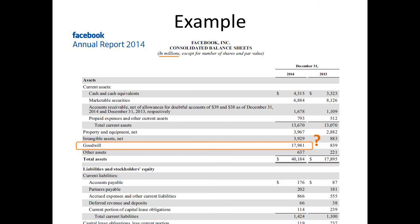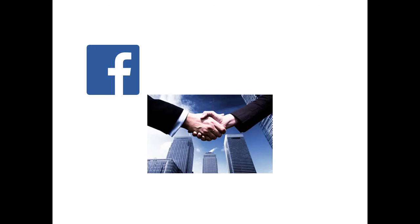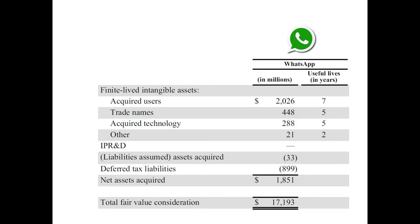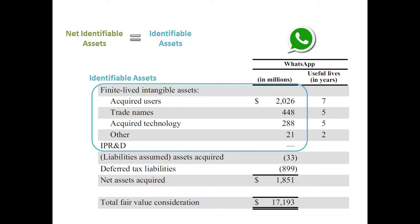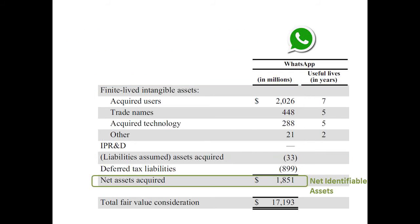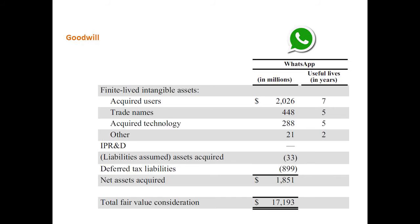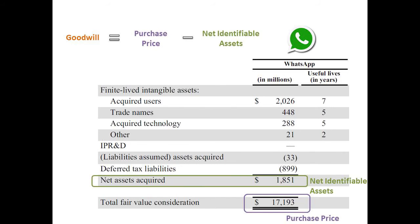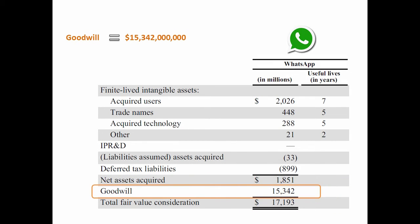How did that number get so high? Well, remember that goodwill only comes into play when a company buys another company. So this means they must have bought somebody. Facebook's bought quite a few companies, but one of them is WhatsApp, and we can look at the specific numbers behind that deal. They paid over $17 billion — that's the total fair value consideration. We can look at the breakdown and see what kind of assets WhatsApp had: users, trade names, technology. Adding up these assets and subtracting liabilities, we get net identifiable assets of around $1.8 billion. But they paid over $17 billion, so the goodwill comes out to over $15 billion. The biggest chunk of that entire purchase is goodwill.